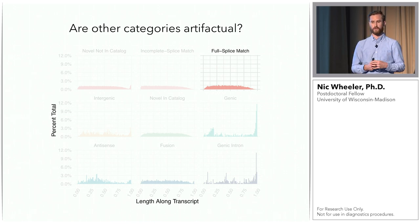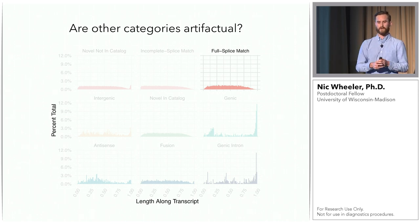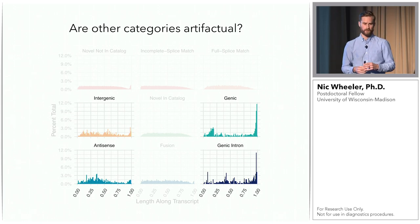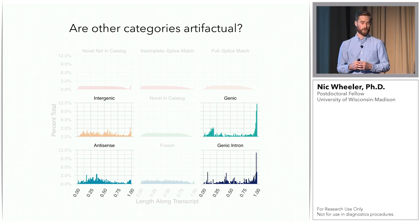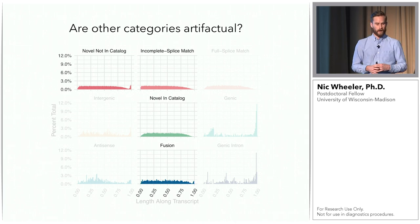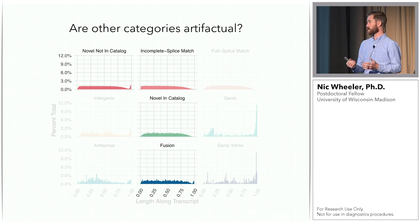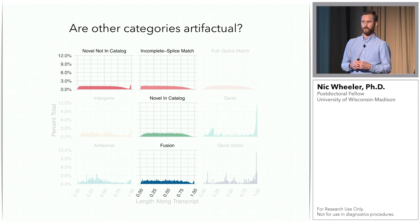We looked at where along the transcript length splice junctions occur. For full splice matches there's a roughly even distribution across the entire transcript with tails on the five prime and three prime ends. For incomplete splice matches there's a strong bias towards the three prime end, suggesting those are probably artifactual. Novel not in catalog shows a pretty even distribution with a strange peak at the three prime end. Novel in catalog and fusion have a distribution like full splice matches, suggesting those are true isoforms, whereas incomplete splice match lacks the tail at the five prime end — again suggesting these are degraded products.